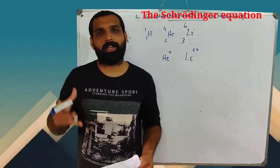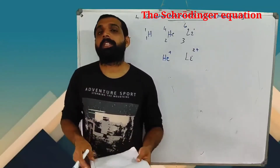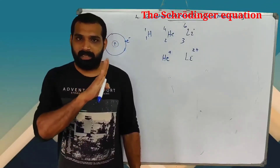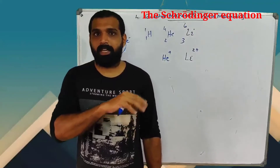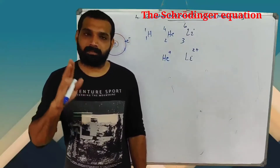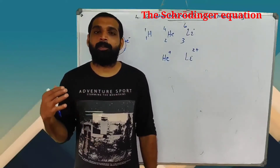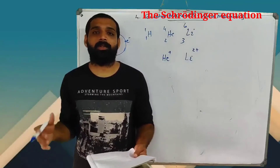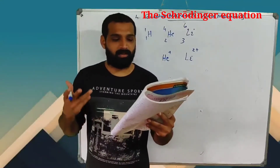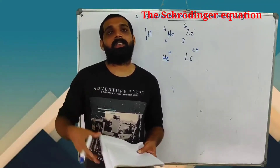The Bohr model just couldn't explain how individual atoms combine — it should account for everything. That's why it was ruled out. Rutherford is completely classical. Bohr is a semi-classical approach — quantization is applied but it is not fully quantum. Pure quantum mechanics was then developed by Erwin Schrödinger, Werner Heisenberg, Max Born, and Paul Dirac.